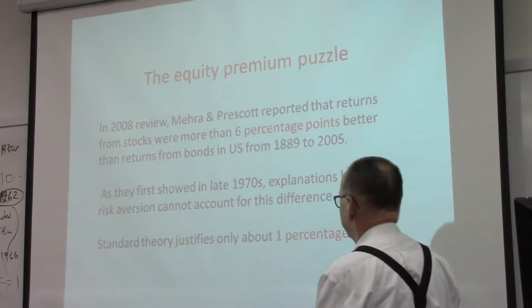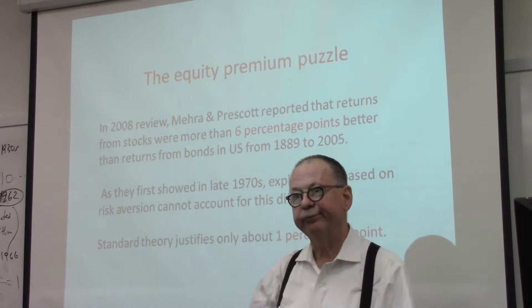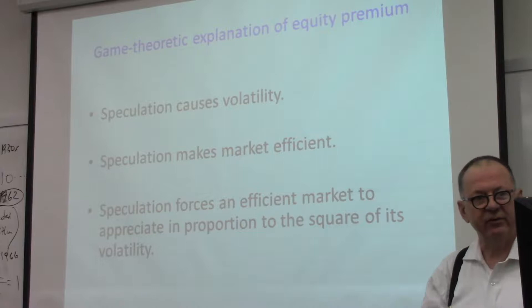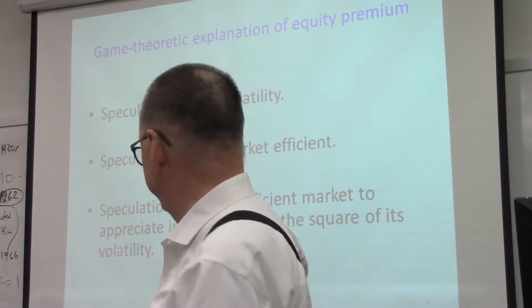The standard risk aversion theory could explain only one percentage point better. So that is the discrepancy — six percentage points observed versus one percentage point predicted by theory — that needs to be explained.